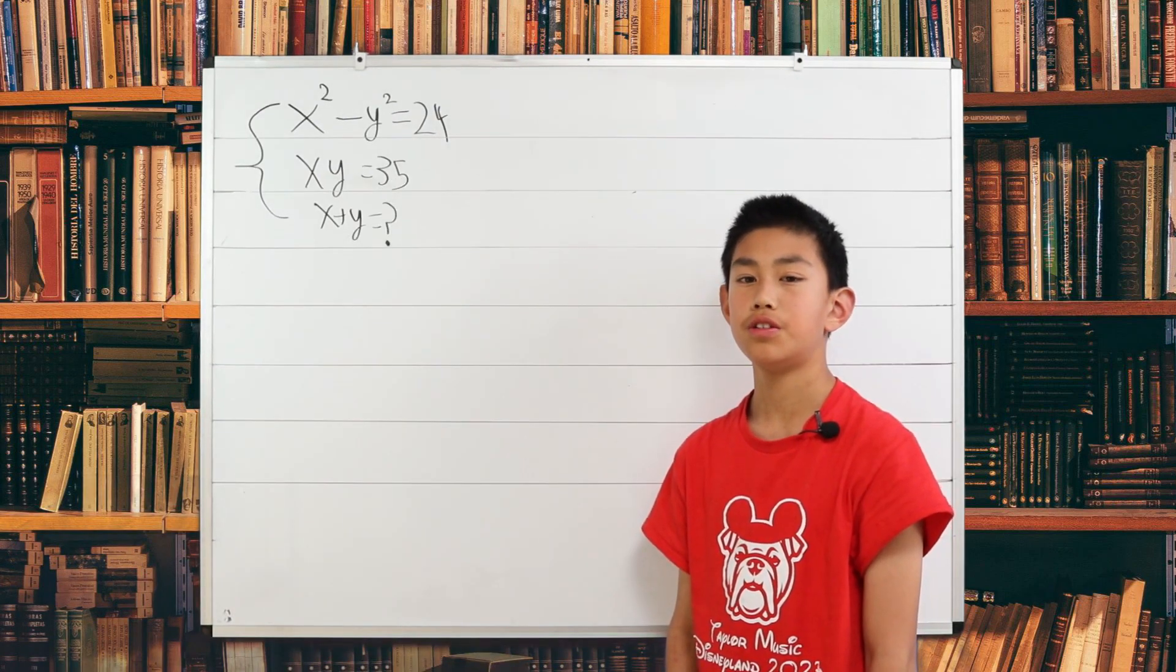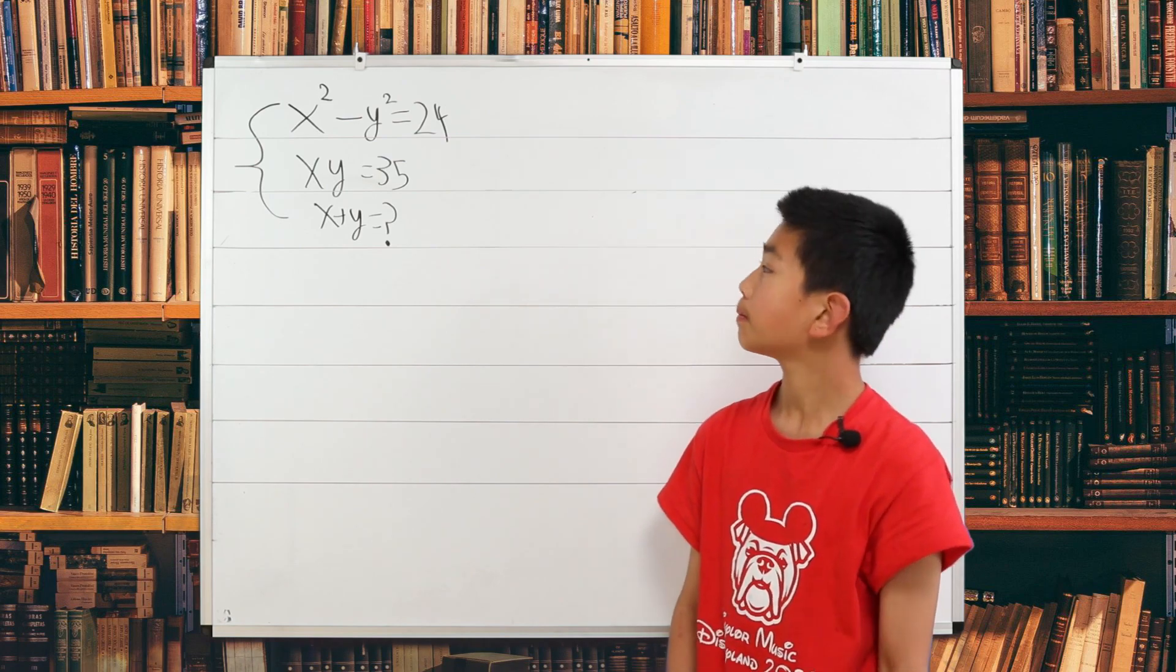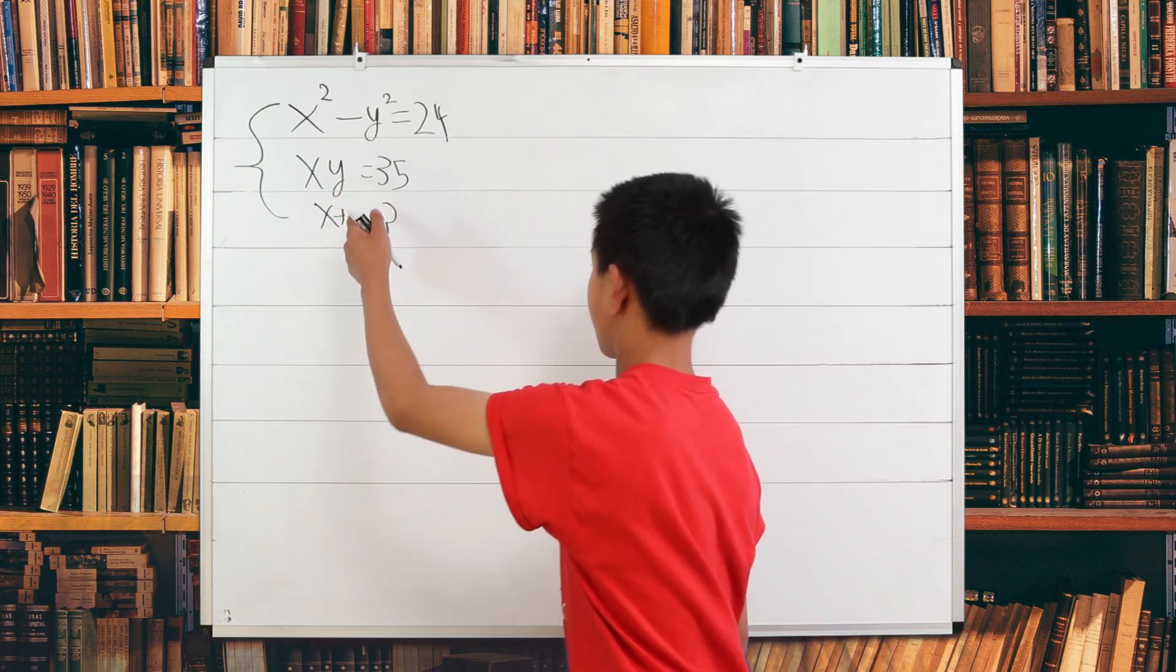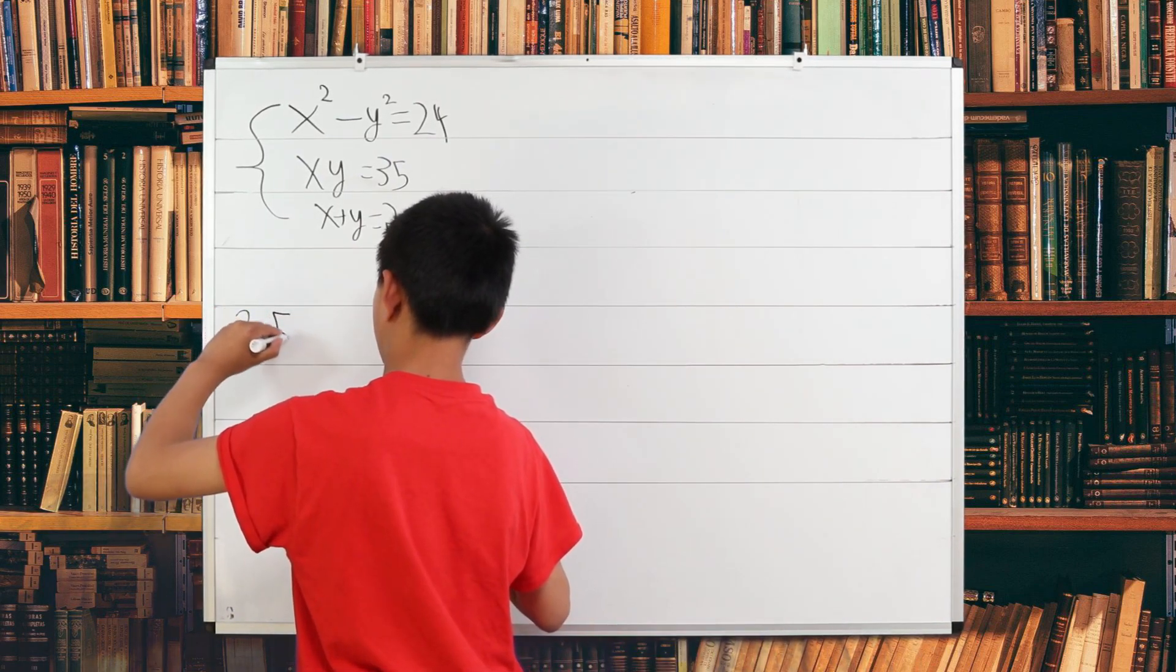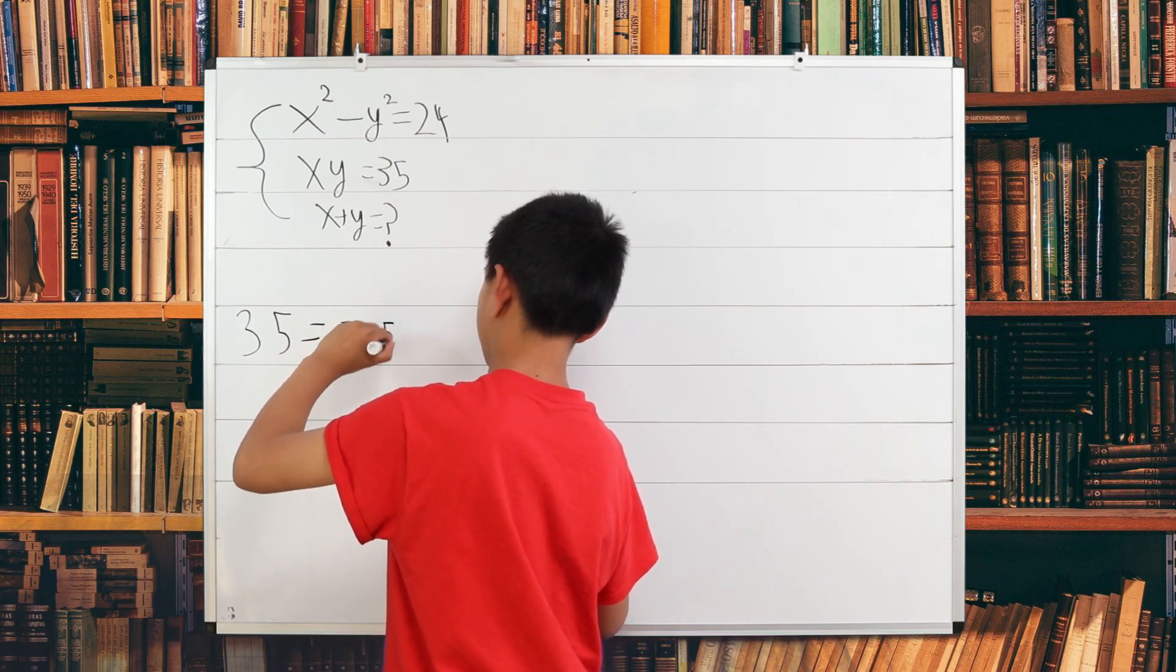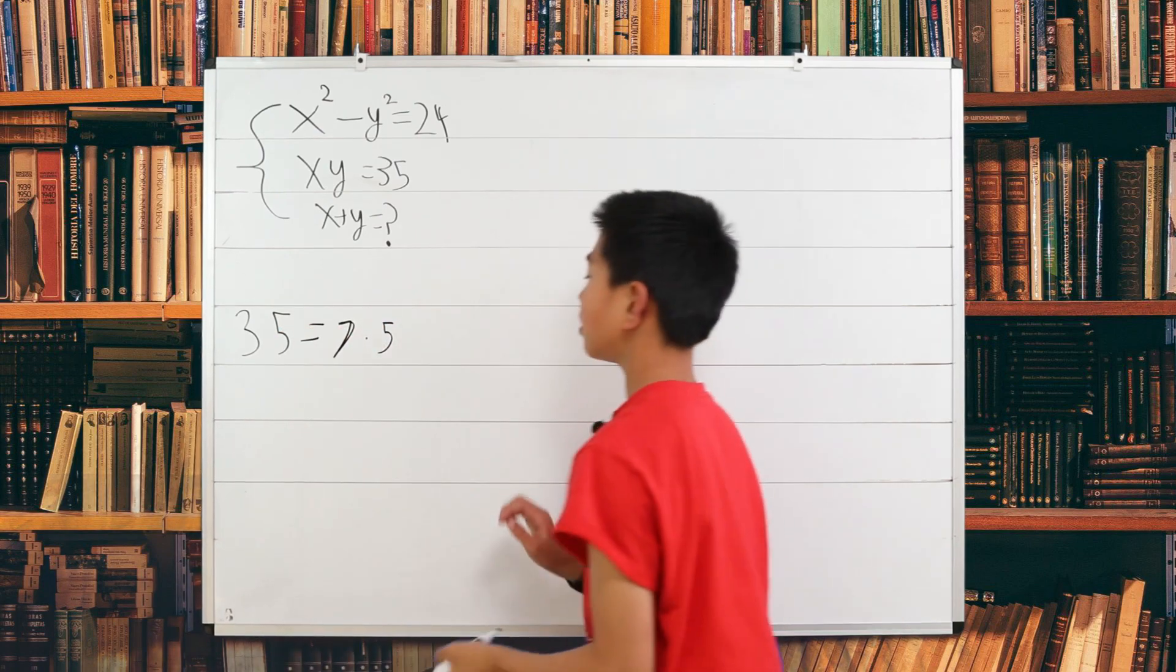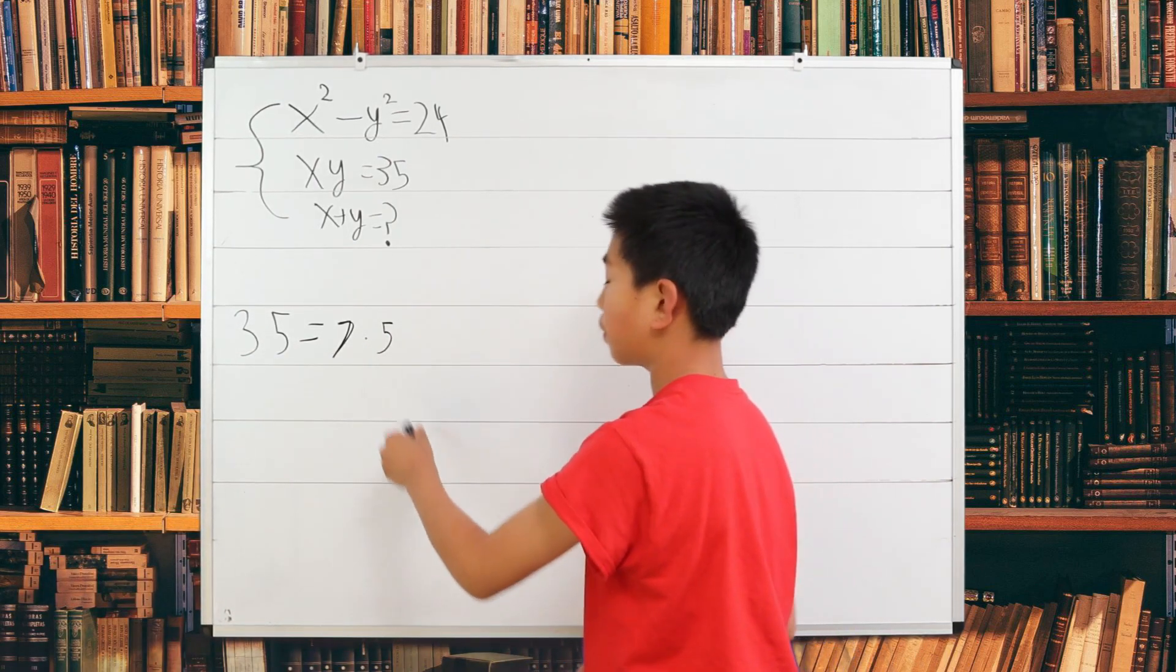The second solution to this problem is one where you have to really think about it. We know that x times y is 35. And 35 can be broken into 7 times 5.